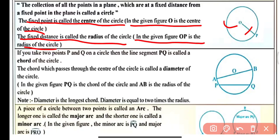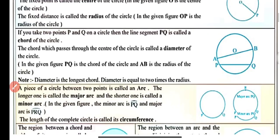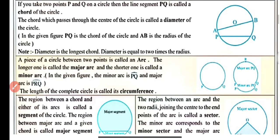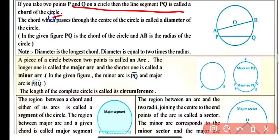If we take two points P and Q on the circle, then the line segment joining P and Q is called a chord of the circle. A chord is a line segment that lies in the interior of the circle and touches the circle at two different points. Here PQ touches the circle at two different points P and Q. A chord always lies in the interior of the circle.